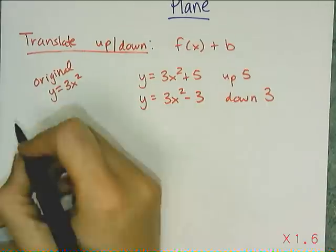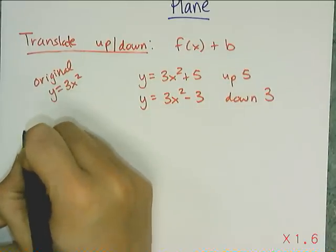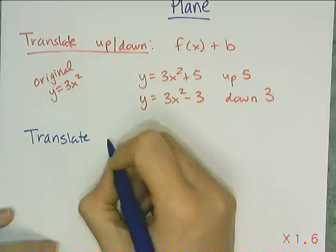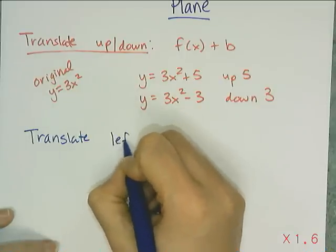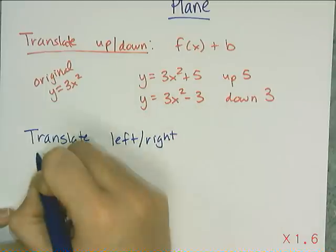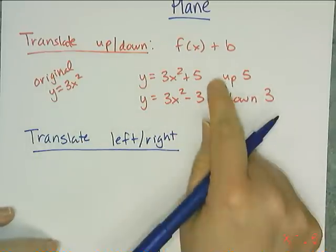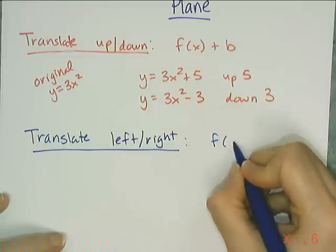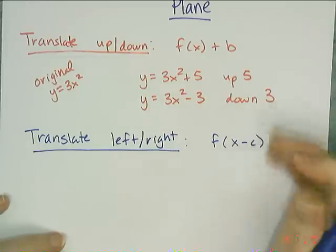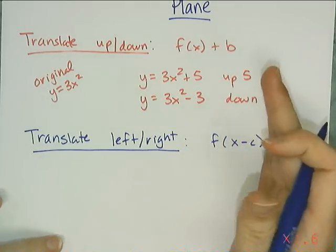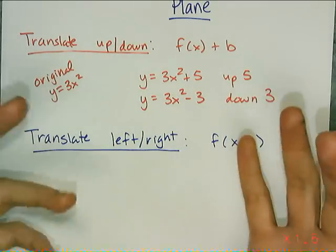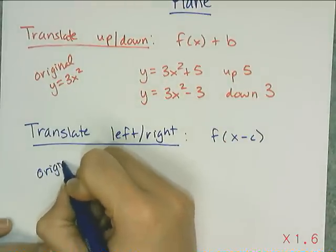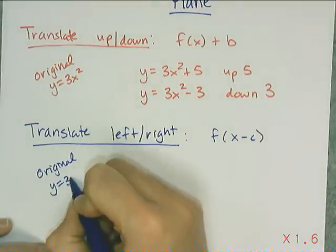Okay. So now, another translation is the left or right translation. And this is a little bit harder to grasp in the beginning, because you don't tack anything on at the end. You don't add it on at the end. You have to add it inside the rule, because what happens is, you want to shift the graph left or right, which means you have to change where things are zero. And so we're going to stick with the original of y equals 3x squared.